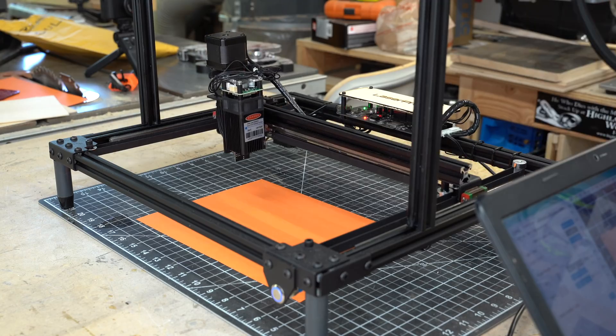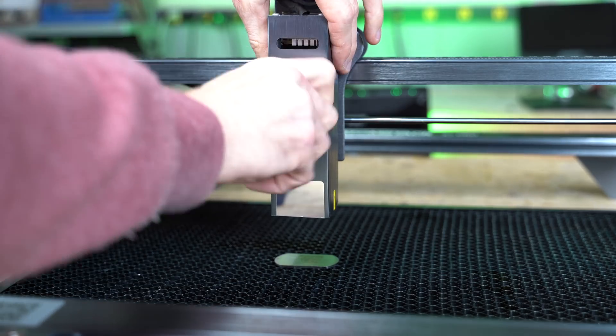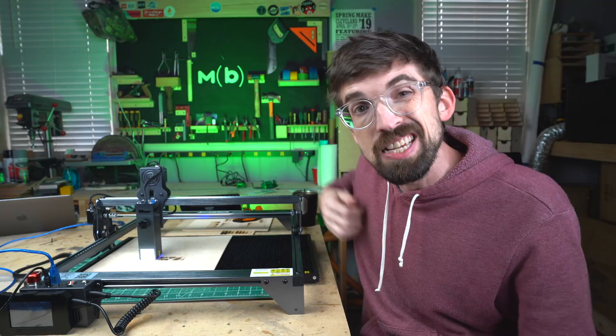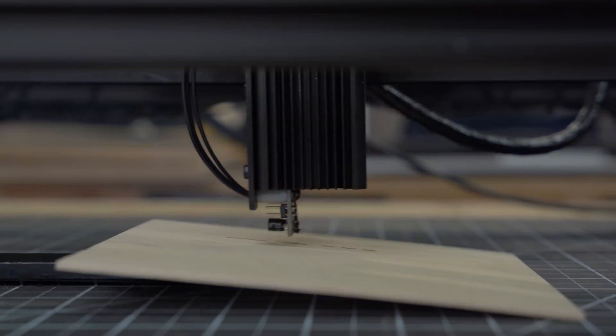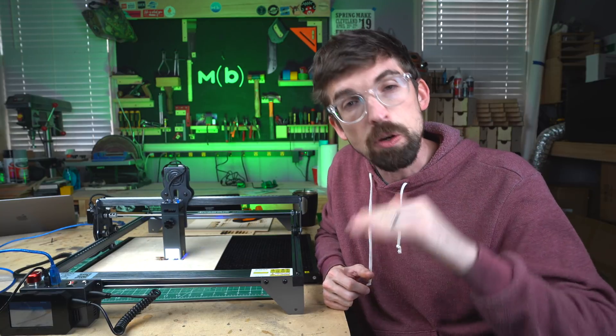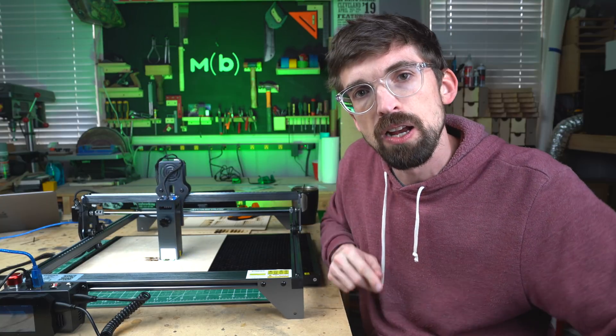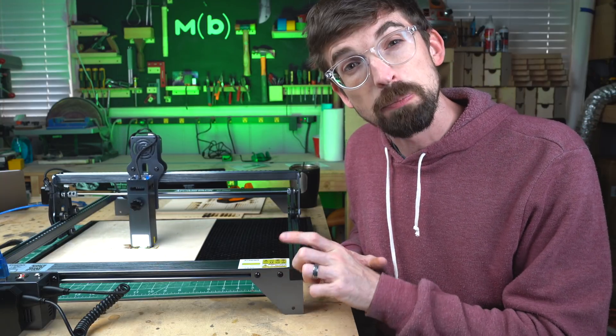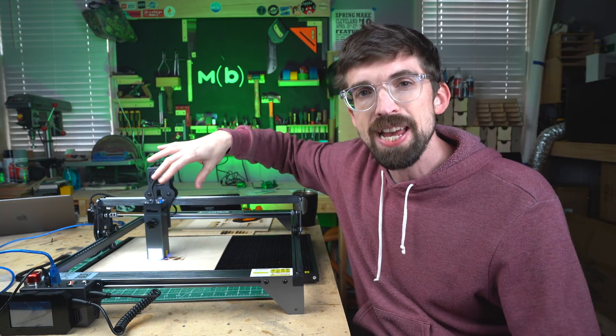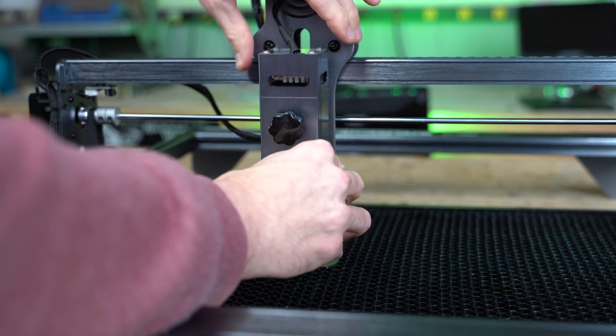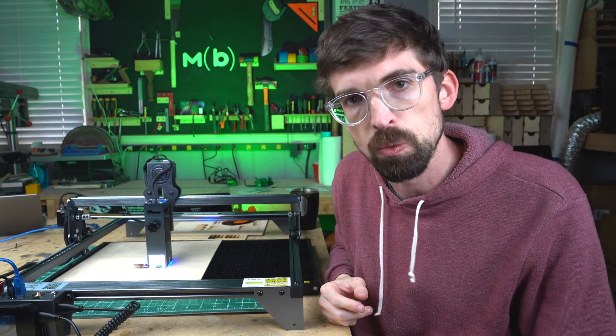This does not have an automatic Z axis, meaning there is nothing that actually moves this up and down other than manual. So there is this little knob on the front that you unscrew and you can raise and lower this guy, which really is pretty easy to make adjustments. But there are some machines that will actually have a sensor inside of the laser module that will be able to tell the distance it is above your material. And then it will auto focus it. With this guy, it is all manual, but we'll get into why that isn't really a huge deal, especially with how they've designed their laser module. I really like their feet design. These are just metal plates and you can actually get extenders as accessories to raise this up even higher.